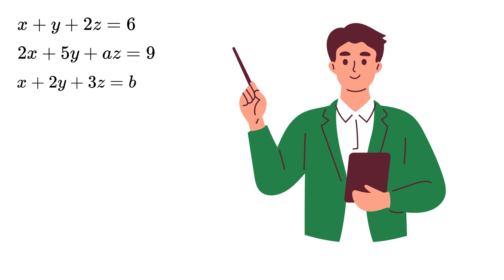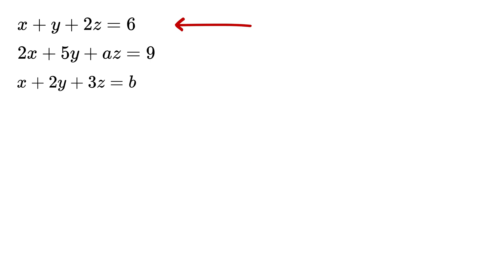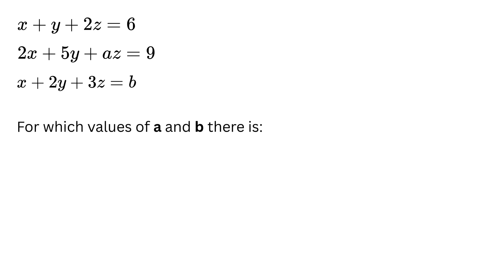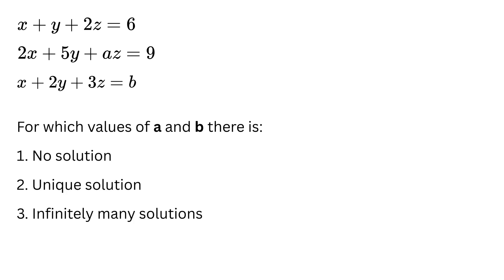We are given a system of linear equations with three variables x, y, and z. You can also notice that we have two other variables a and b. The question is: for which values of a and b is there no solution, exactly one solution, or infinitely many solutions?